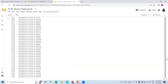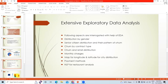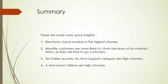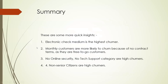This is how we completed this pipeline. In summary: electronic check medium is the highest churner. Monthly customers are more likely to churn because of no contract terms — as free-to-go customers, they may have taken services just to try. No online security and no tech support being given to customers is causing more churn. Non-senior citizens are the high churners. These are the key results from the analysis.